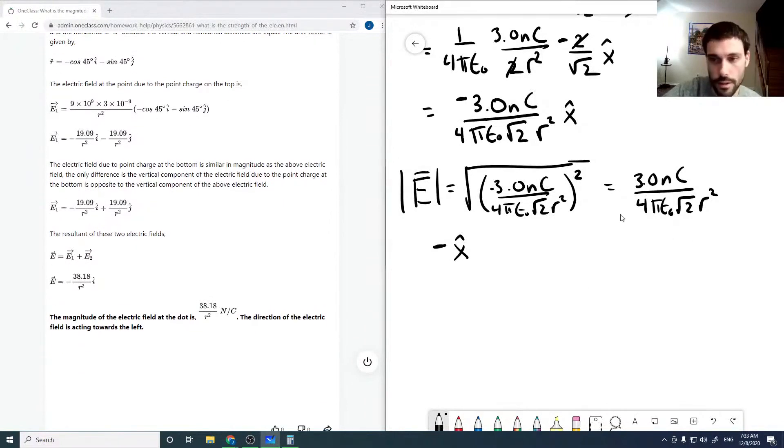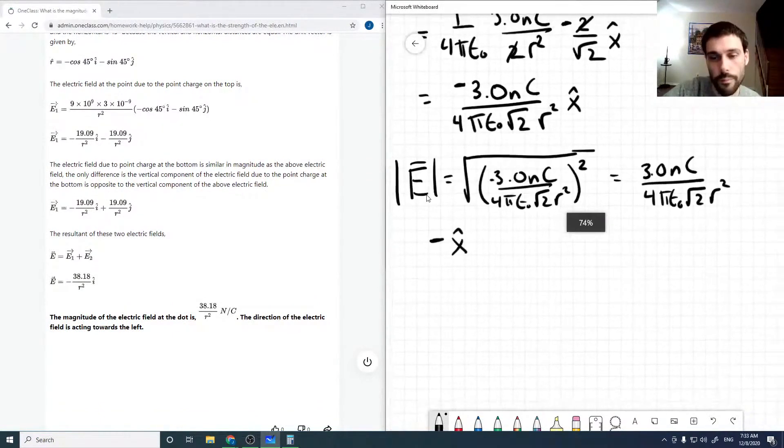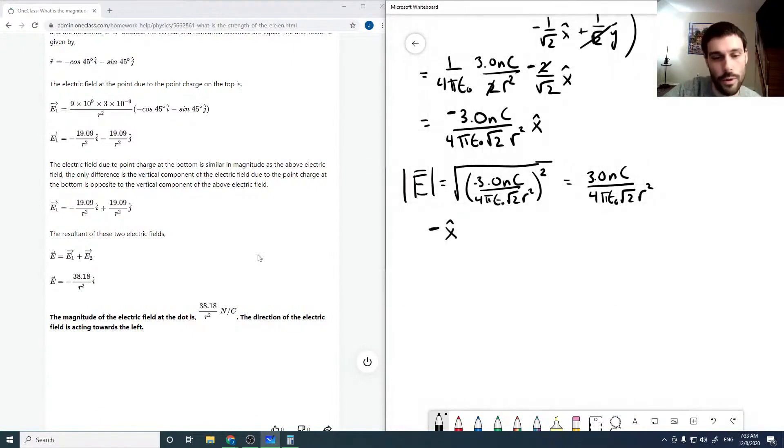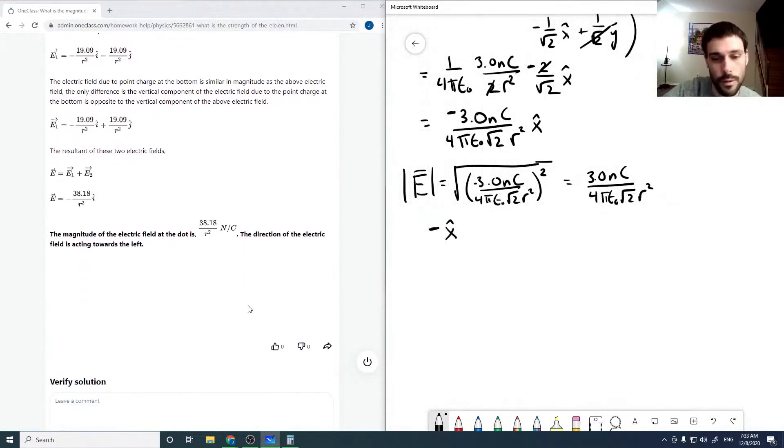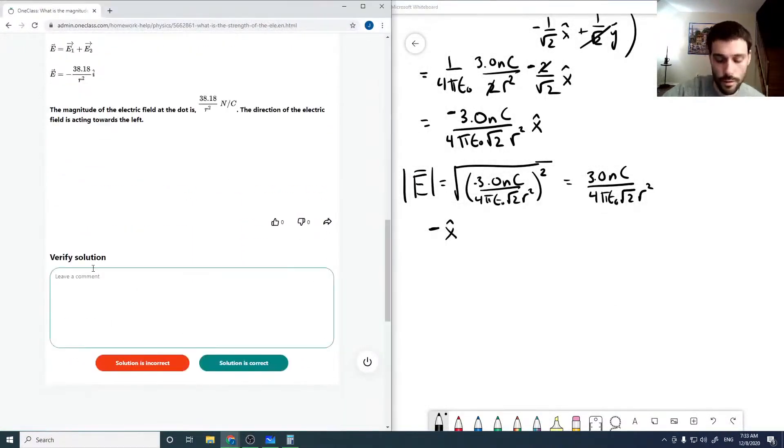The magnitude is just the unsigned value and the direction is in minus x, or from the figure, towards the left. So this looks good. The solution is correct.